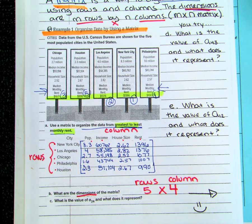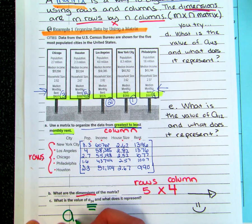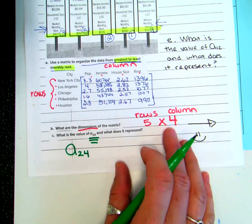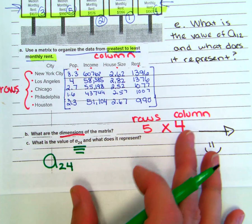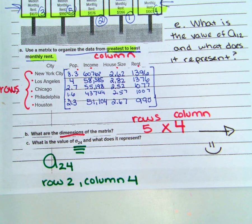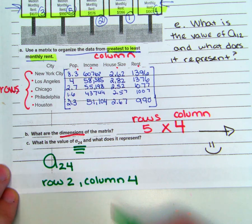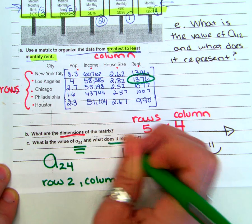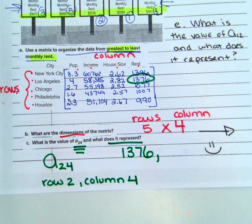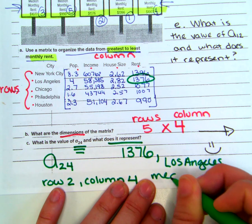Now we find a specific element — they call it an element in the matrix. We're looking at element A₂₄, which means row two, column four. Going down two rows and over four columns — like reading a table — what number is in that spot? $1,376. What does that represent? It's the Los Angeles median monthly rent.